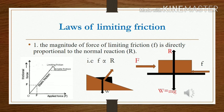Now let's talk about the laws of limiting friction. The first law states that the magnitude of the force of limiting friction is directly proportional to the normal reaction. Remember, limiting friction is a type of static friction — specifically, it is the maximum value of static friction. So in other words, the maximum value of static friction is directly proportional to the normal reaction.